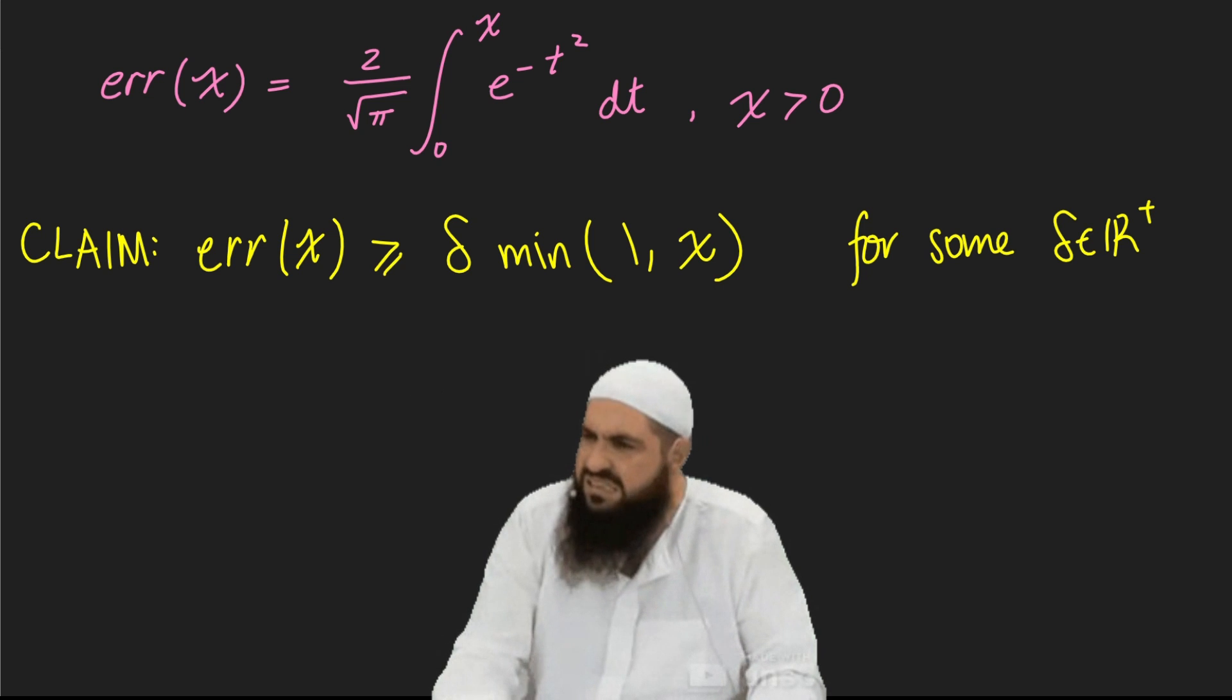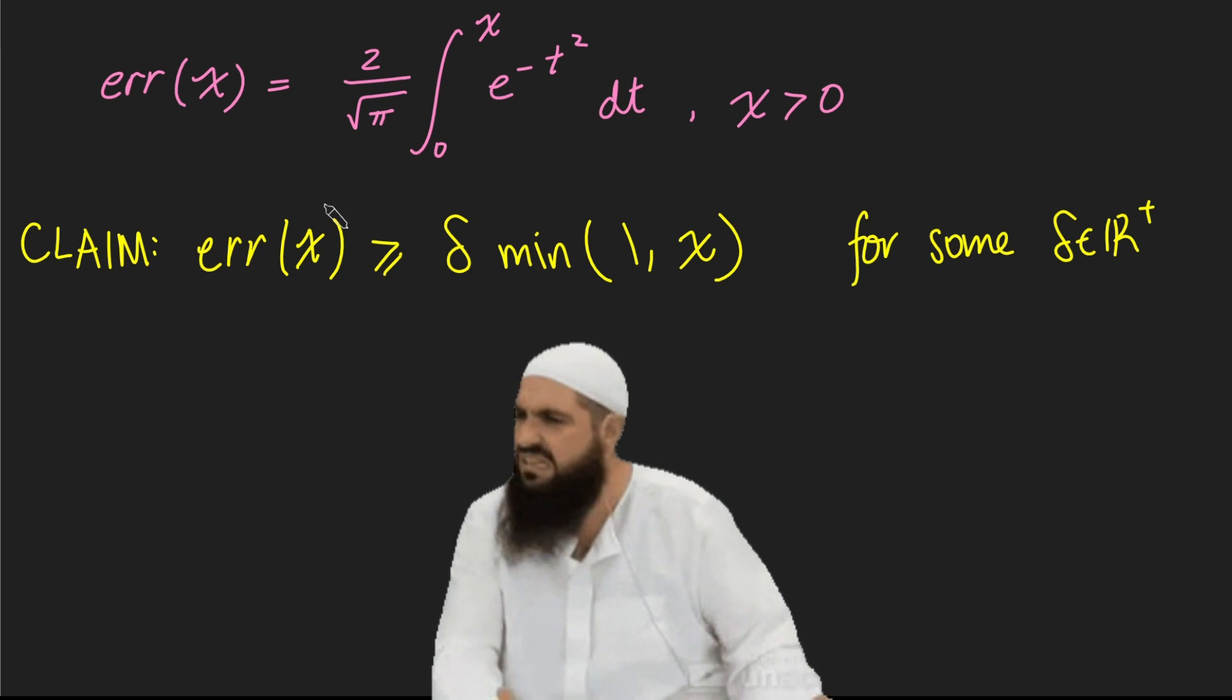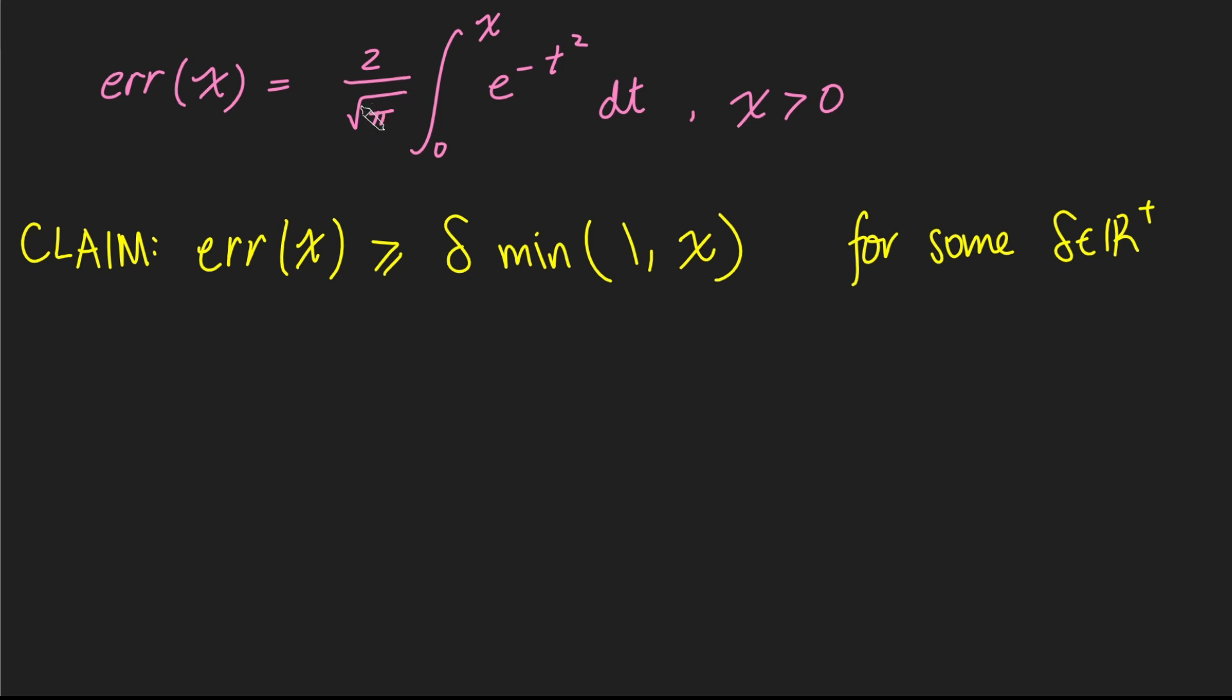Hi, thanks for joining me. Today we're going to be looking at the error function of x, which is defined as 2 over root pi times the integral from 0 to x of e to the negative t squared dt, where x is positive.